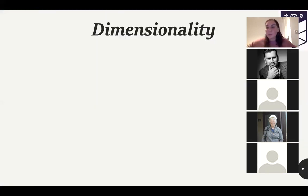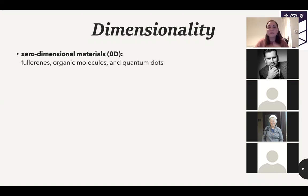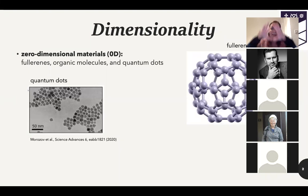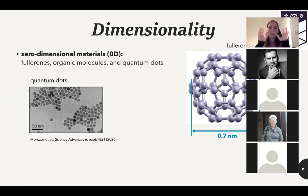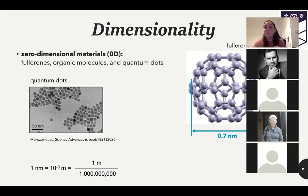To talk about two-dimensional materials you need to talk about dimensionality. Let's start with zero-dimensional materials. Zero-dimensional materials are fullerenes, organic molecules, and quantum dots. A fullerene is a ball made of carbon atoms - the most famous fullerene has 60 carbon atoms arranged in pentagons and hexagons, with a diameter of about 0.7 nanometers. A nanometer is about one billionth of a meter - really really small.